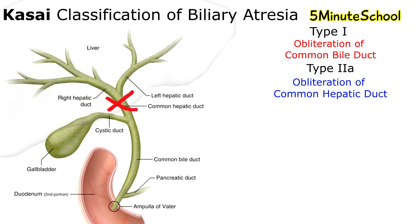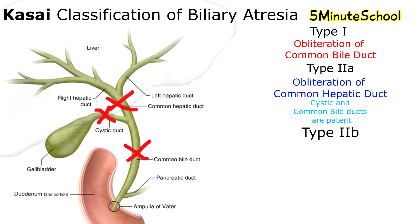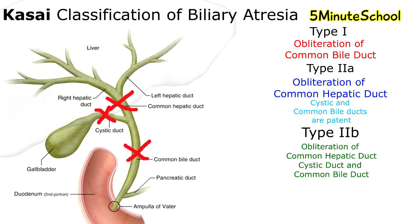In this situation, the cystic duct and the common bile duct are actually patent — so they're okay — but the problem is with the common hepatic duct. Type 2B involves obliteration of the common hepatic duct, the cystic duct, and the common bile duct.